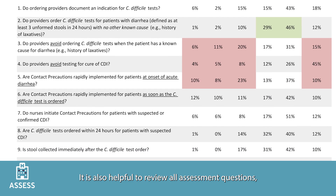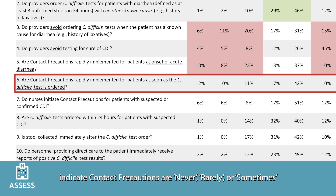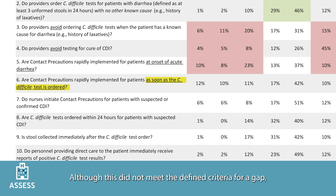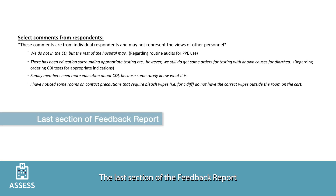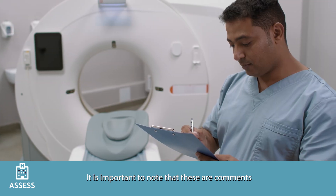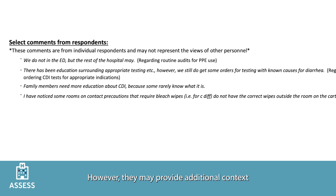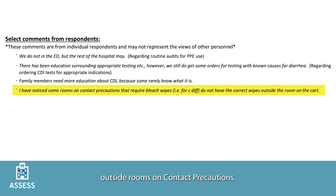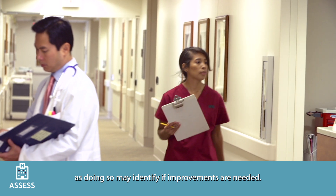It is also helpful to review all assessment questions, not just those highlighted in red or green. For example, one question had over 30% of respondents indicate that contact precautions are never, rarely, or sometimes rapidly implemented for patients as soon as the C. difficile test is ordered. Although this did not meet the defined criteria for a gap, it may still be identified as an opportunity for improvement. The last section of the feedback report displays select comments from respondents, which may provide additional context and insight into perceived gaps.